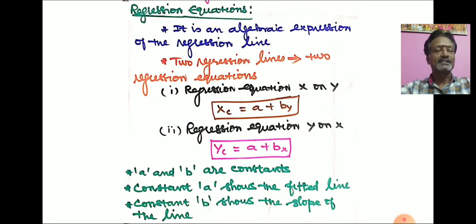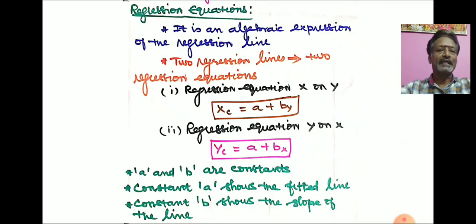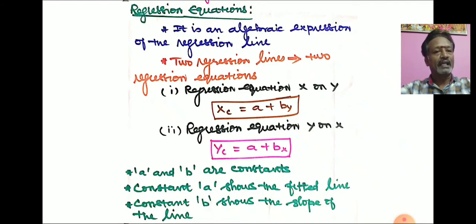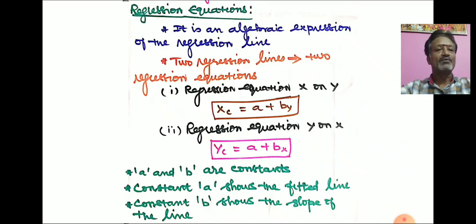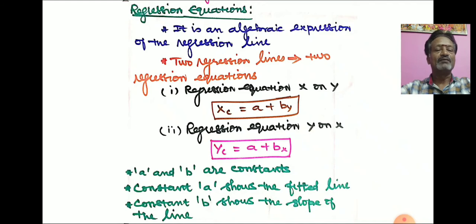Then, the regression equation. A regression equation is an algebraic expression of the regression line. If we express the regression line in mathematical form, that is called a regression equation. When there are two regression lines, there are two regression equations. One is the regression equation x on y: xc equal to a plus b·y. And the second regression equation y on x: yc equal to a plus b·x.